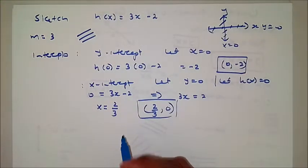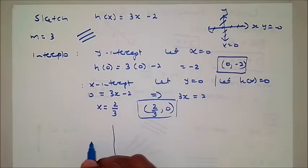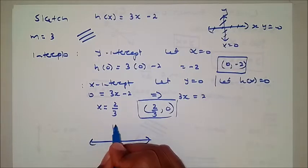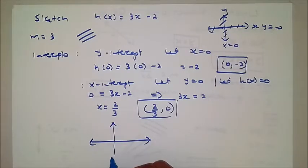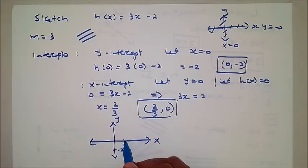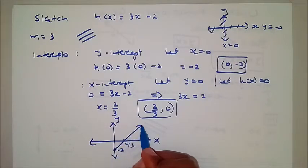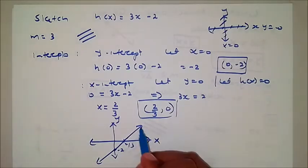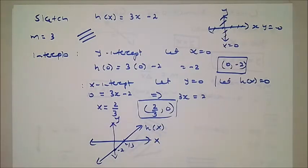As far as linear functions are concerned, that's all you need — find the y-intercept at (0, -2) and the x-intercept at (2/3, 0), then join them. It's a sketch after all. At Grade 10 level, remember to use your ruler.